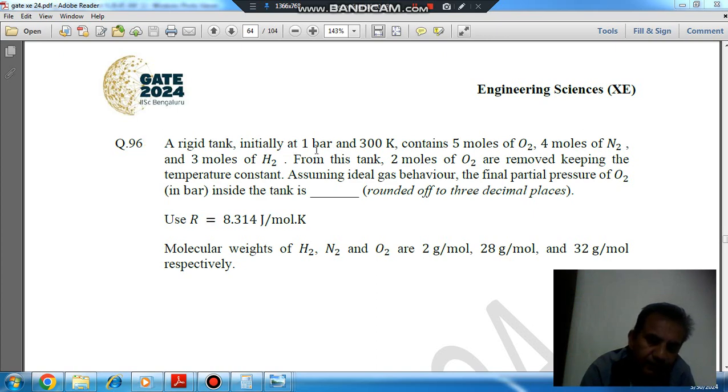A rigid tank initially at 1 bar and 300 Kelvin contains 5 moles of O2, 4 moles of N2, and 3 moles of H2. From this tank, 2 moles of O2 are removed, keeping the temperature constant.